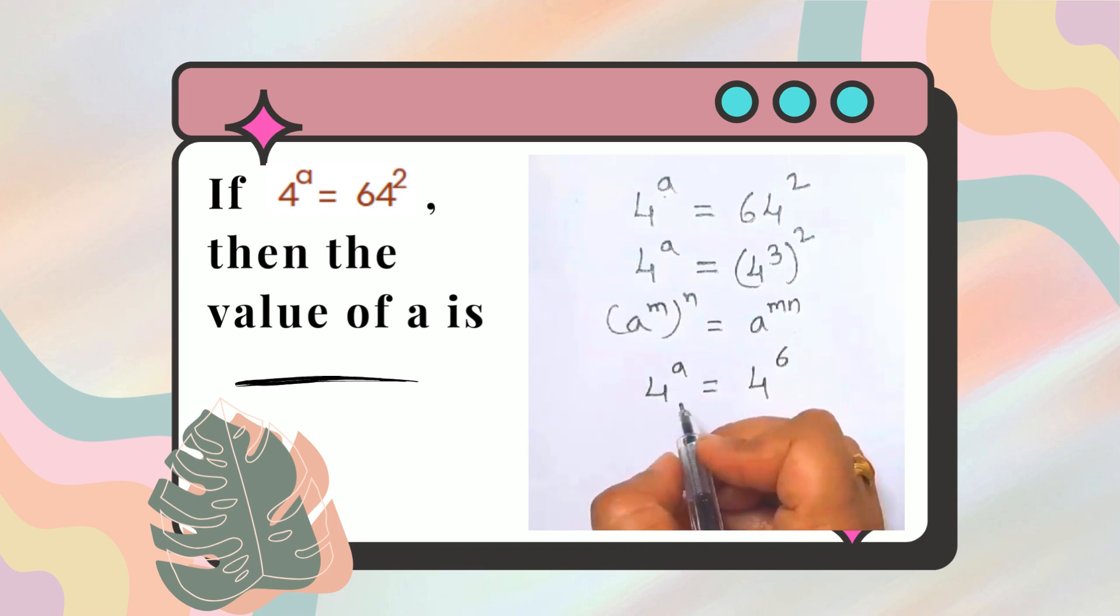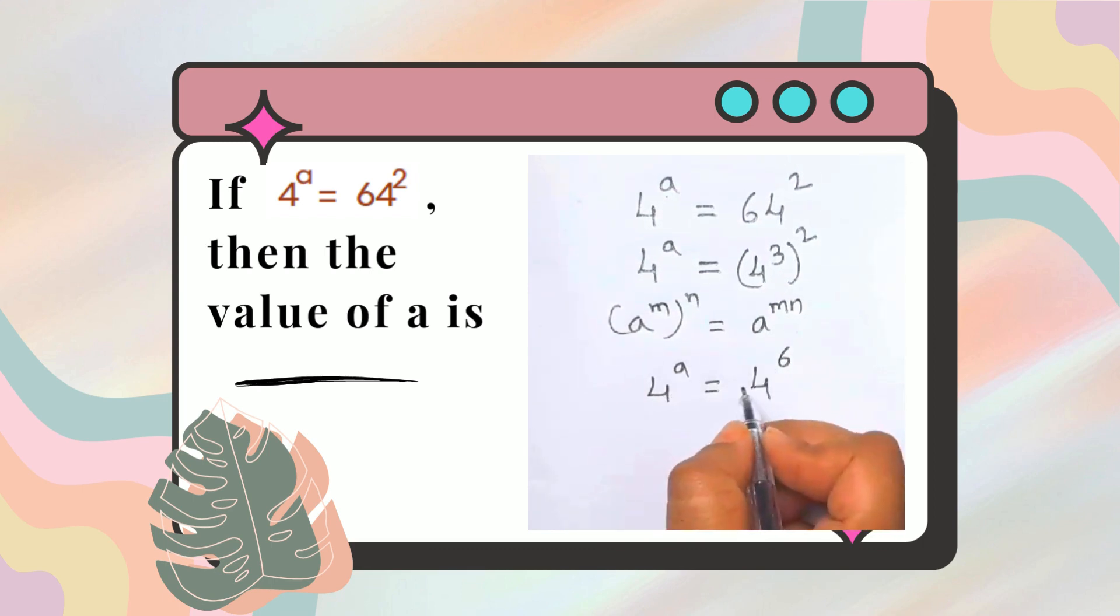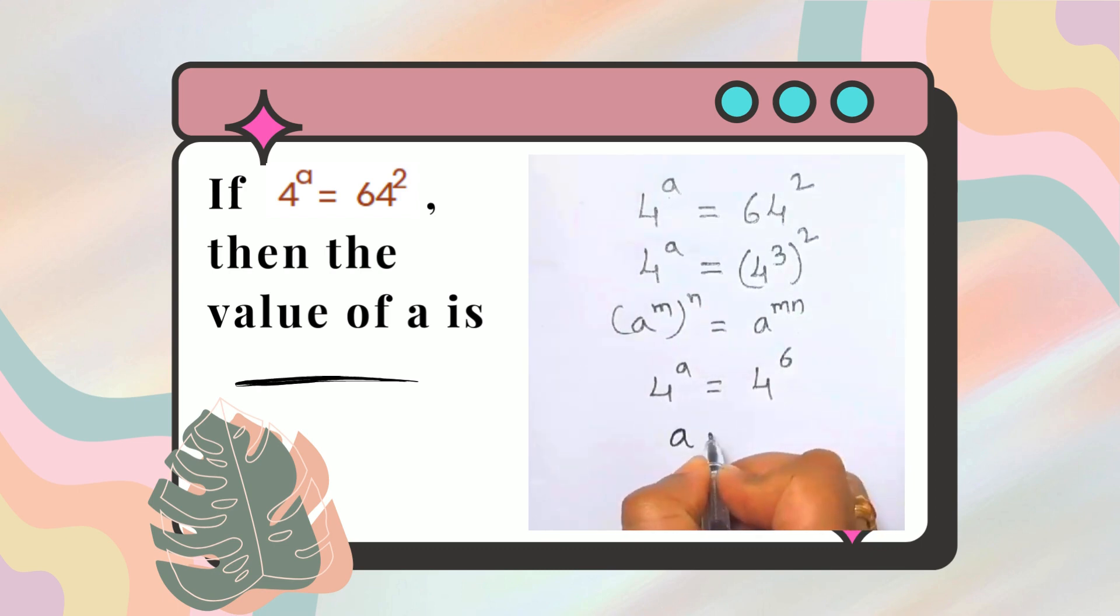Now according to the rule of exponents, if two powers with same base are equal, then exponents must be equal. So here we equate the exponents. What are our exponents? A equals 6. So the value of A is 6.